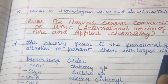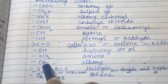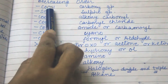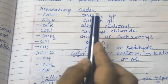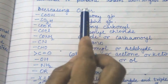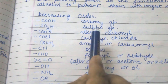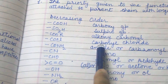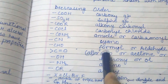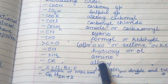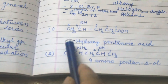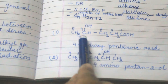These are the functional groups. For example, the carboxyl group has more priority compared to the sulfo group. Sulfo group has more priority than alkoxy, alkoxy more than carbonyl, then amide, cyano, formyl, ketone, hydroxy, amino, alkoxy, halogens, double bond, triple bond, and then alkane. This is the priority table.